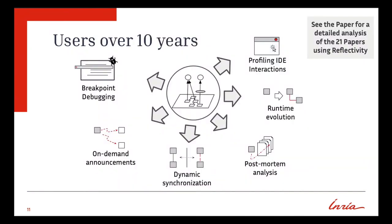These properties have led to Reflectivity being useful for many projects. Looking at publications over the last 10 years, we found 21 papers that use Reflectivity in one form or another. This slide gives an overview of the kinds of things people did: implementing breakpoints, debugging, on-demand announcements, dynamic synchronization, post-mortem analysis, runtime evolution, profiling, IDE interactions, and dynamic aspects, which was a huge topic at the beginning of the research. For details of these publications and especially which features each actually needed, we refer to the paper, which has an extensive analysis of which features were useful for the different experiments.